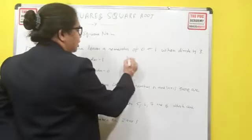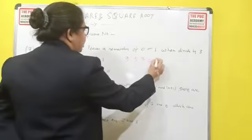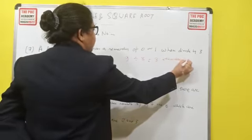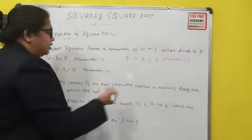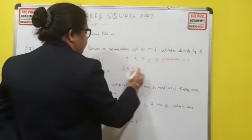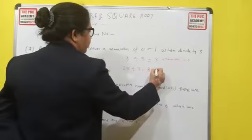Take another example. 9 divided by 3, which is 3 and remainder is 0. Take another example. 25 divided by 3, which is 8 and remainder is 1.